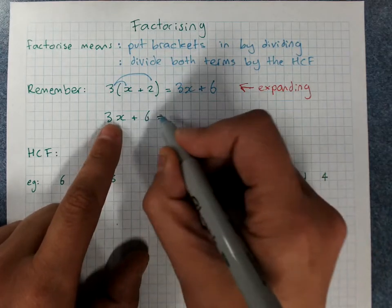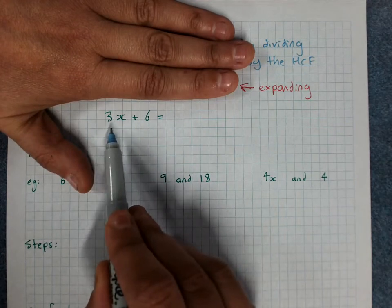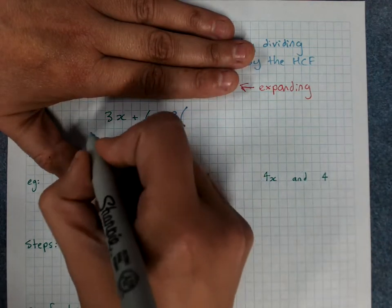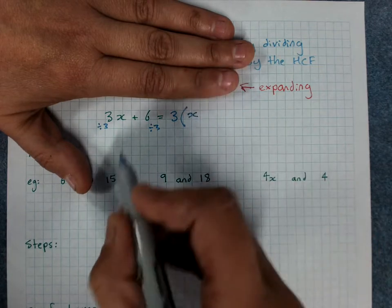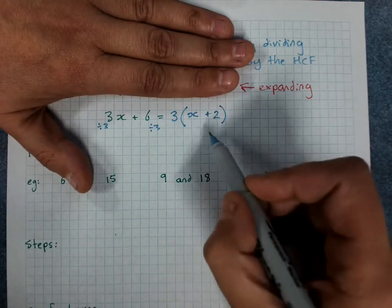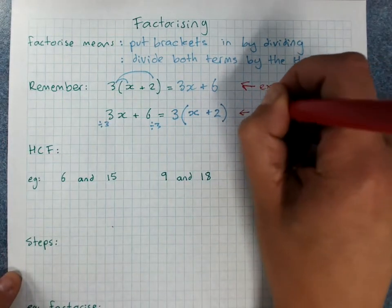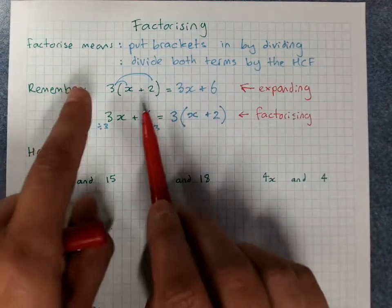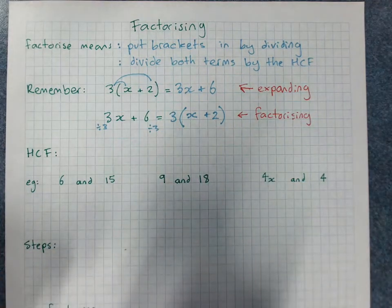Factorizing means find the number. Pretend we didn't know that. Find the number that goes into both of these. It's 3. Put it out the front of the brackets and then divide both of the terms by 3. 3x divided by 3 is x. 6 divided by 3 is 2. And it was positive 2. So we write plus 2. That's factorizing. And you'll see it got us right back to the start. Now we haven't really learned how to do factorizing yet. I'm just showing you that expanding gets rid of the brackets and factorizing puts them back in. It gets right back to where we started. We need both skills.